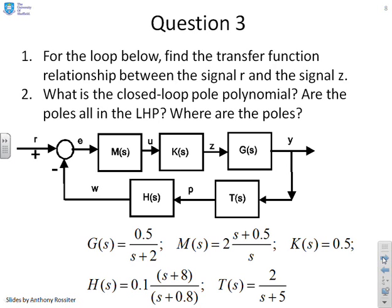Final question: for the loop below, find the transfer function relationship between signal R and signal Z. It's asked about the closed loop pole polynomial, are all the poles in the left half plane, and where are the poles. But we'll give a warning: the transfer functions are beginning to get quite complex in terms of high order. This is not going to be a paper and pen task. Once the number crunching gets tedious, it's quicker to turn on the computer and get the computer to do it.